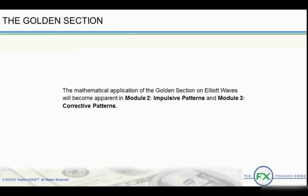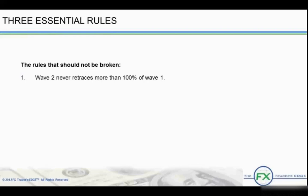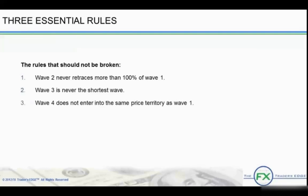The mathematical application of the golden section on Elliott waves will become apparent in Module 2, Impulsive Patterns, and Module 3, Corrective Patterns. There are three rules of the Elliott Wave Principle that cannot be broken. Rule 1: Wave 2 never retraces more than 100% of Wave 1. Rule 2: Wave 3 is never the shortest wave. Rule 3: Wave 4 does not enter into the same price territory as Wave 1. If any one of these rules is violated, then the operative wave count is incorrect and there must be an alternative wave count to follow.